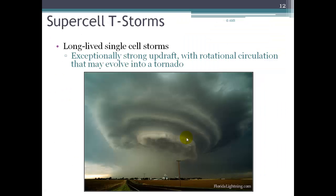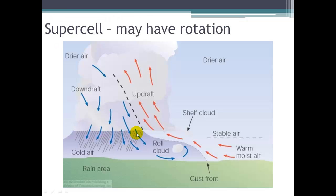A third classification is the supercell thunderstorm. It's a single cell, but a very intense, long-lived one with an exceptionally strong updraft and rotational circulation. These often develop into tornadoes. Here's a picture of a supercell — a very ominous-looking thunderstorm — and you can see it has taken on some rotational movement.